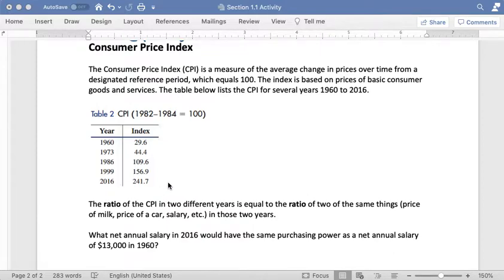So the ratio of the CPI in two different years is equal to the ratio of two of the same things. So we could look at price of milk, price of car, salaries, anything like that that we want to look at in those two years. So the ratio is kind of the key idea here.